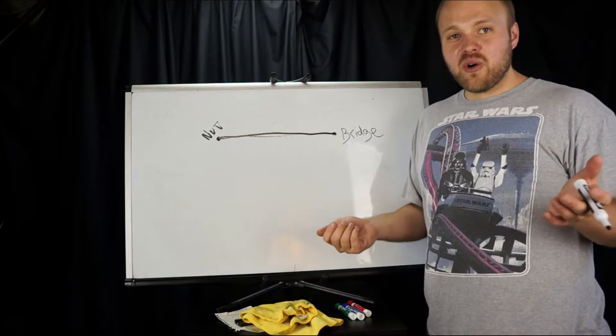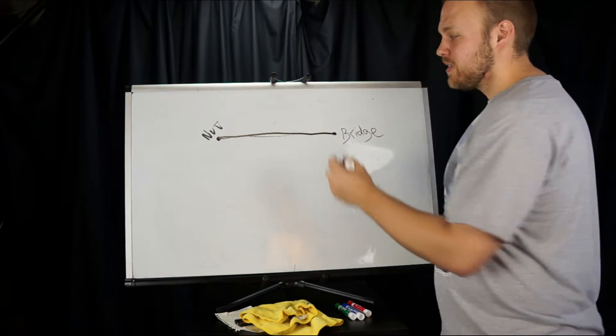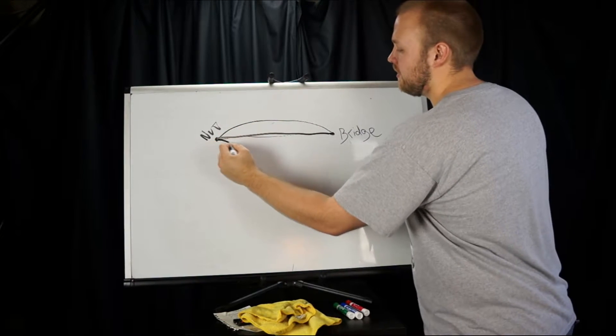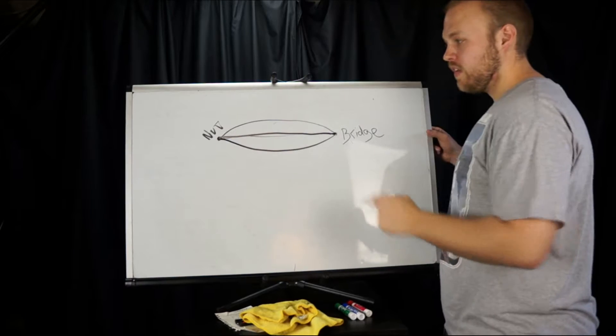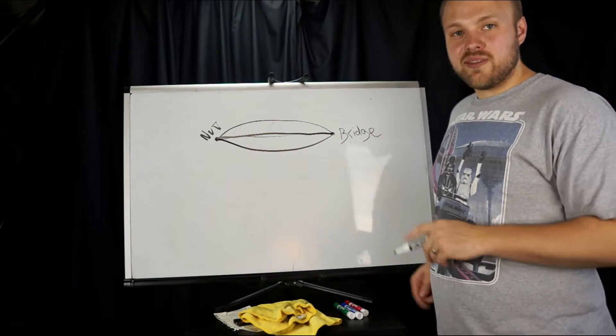And the length is the scale length. When you pluck that string, it's vibrating in an ellipse. You can do this with a bungee cord or a rubber band. Just snap it tight and watch what happens. It spins, it moves in an ellipse. So drawing it, it looks something like this. That is what's called a fundamental frequency.